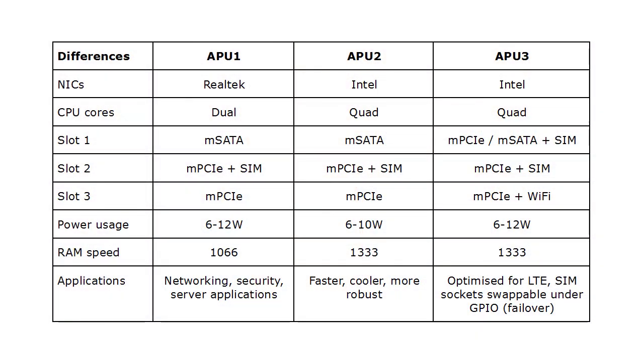So those are the key differences between the APU1, APU2 and APU3 boards. Check out this quick summary that I've put together for you of all the differences I just outlined. We currently offer the APU1 and the APU2 products and we'll probably start offering the APU3 once the board revision moves from B to C, when they tend to be more stable.